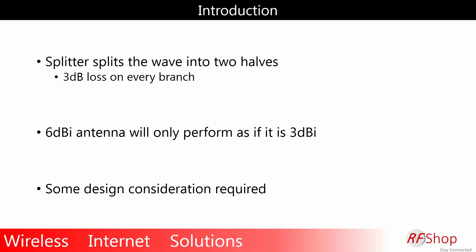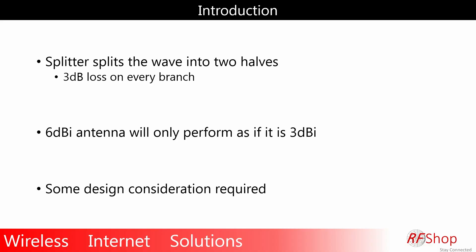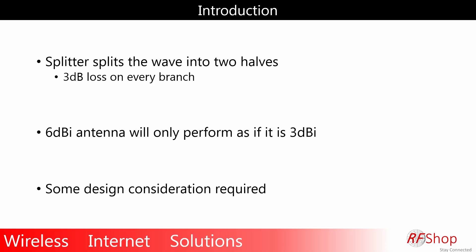This is a short video. One thing to keep in mind: a splitter literally splits the signal. We're not talking about electricity here — we're talking about radio waves. Think of it like water flowing: a splitter splits what comes out of the antenna into two, which means it's a 3dB loss to one antenna and a 3dB loss to the other. So if you had a 6dBi antenna, it will perform like a 3dB antenna.